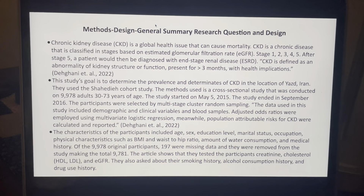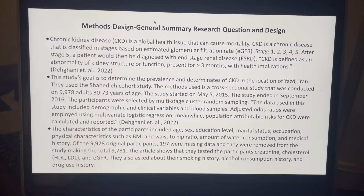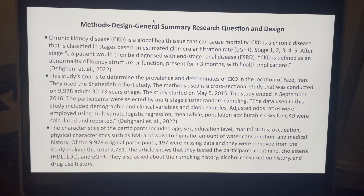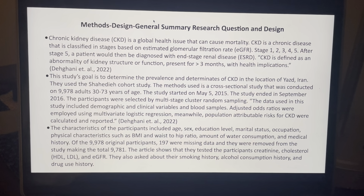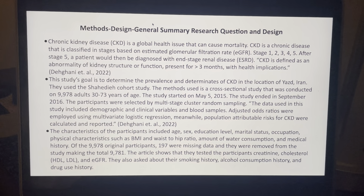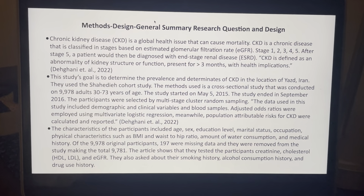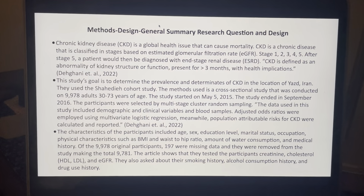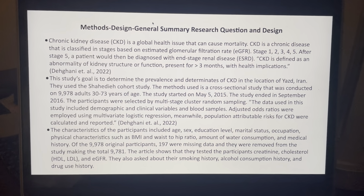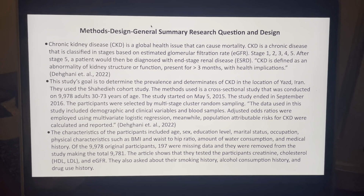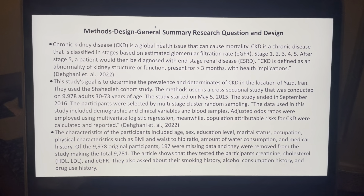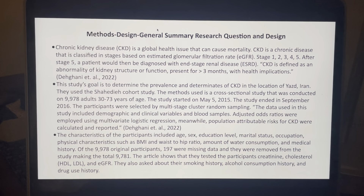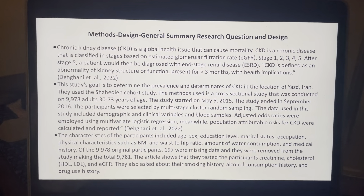The methods used is a cross-sectional study that was conducted on 9,978 adults from 30 to 73 years of age. The study started on May 5, 2015, and the study ended on September 2016. The participants were selected by multi-stage cluster random sampling. The data used in the study included demographic and clinical variables in blood samples. Adjusted odds ratios were employed using multivariate logistic regression. Meanwhile, population attributable risks for CKD were calculated and reported.